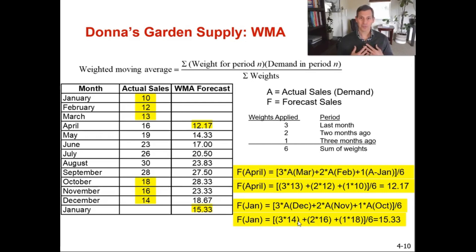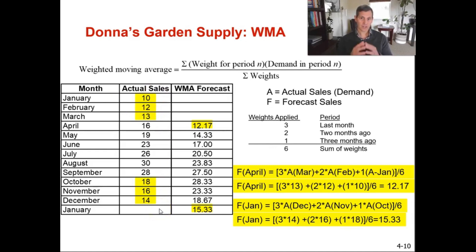If I worked for Donna in the forecasting department, I would personally apply a much higher weighting to the last month — something like 7, then 2, then 1, with the sum of weights being 10. That would put far more emphasis on the last month, because she clearly has a seasonal trend. I would want my forecast to react quickly, not slowly, and put a higher weight on the last period.